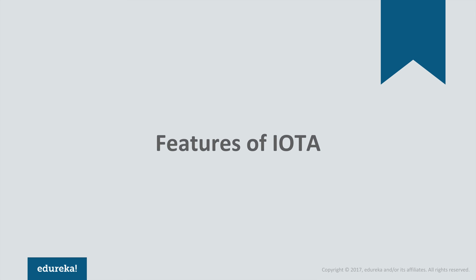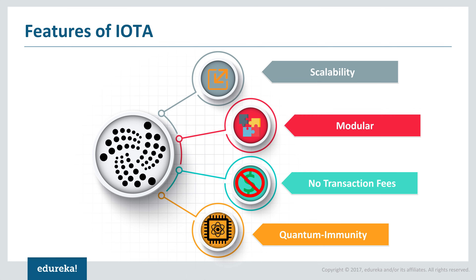Now let's look at the key features that make IOTA stand out compared to other blockchain implementations. One of the most key factors is the capability of its scalability. IOTA can handle far more transactions. If we compare transactions per second — a critical factor for any blockchain implementation — Bitcoin can handle about 3 to 5 transactions per second and Ethereum about 15 transactions per second.